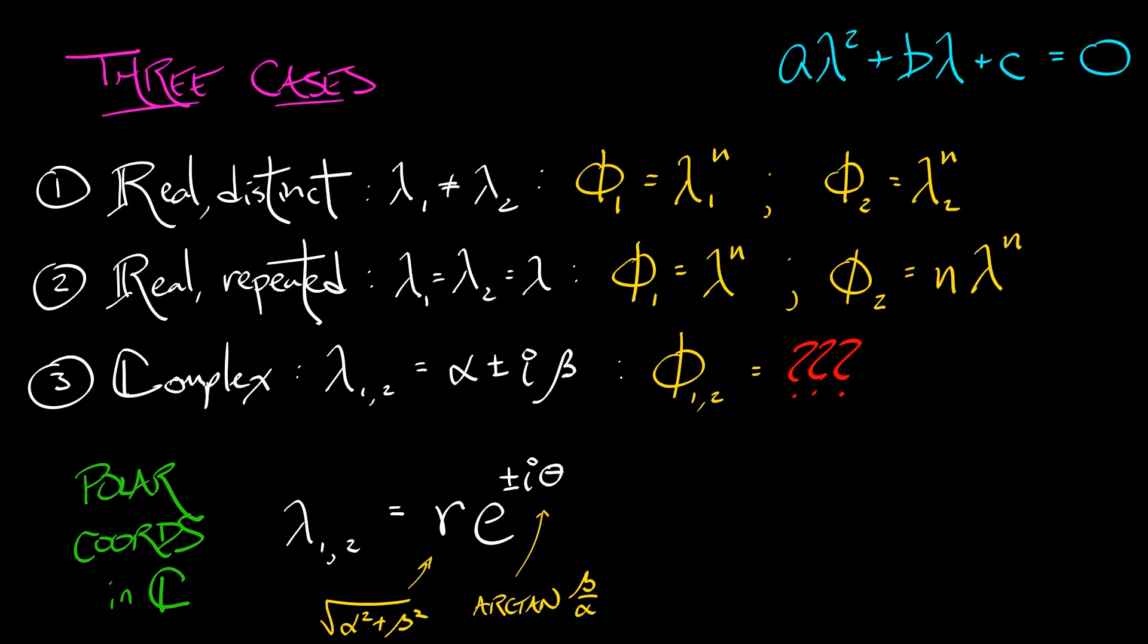That magnitude argument expression allows us to very concisely say what the basis solutions are. They are φ1 = r^n cos(nθ) and φ2 = r^n sin(nθ). That's it. That's our basis solutions. Very, very nice.